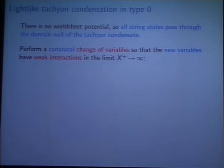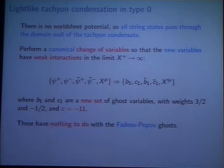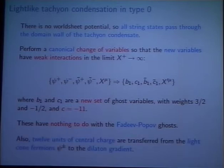So this theory again is so solvable and so simple. We can perform a change of variables to find a weakly interacting set of world-sheet variables for when x⁺ is large. We just exchange the light cone left and right moving fermions for a new ghost system, a ghost system we'll call B₁C₁. The weights are 3/2 and -1/2. The central charge is -11. And they have nothing to do with the Faddeev-Popov ghosts, they're just a new set of ghosts. They're not Faddeev-Popov ghosts, but there's just some canonical transformation one can perform. So these B₁C₁ degrees of freedom are emergent. They come from the light cone world-sheet fermions. By the way, when one analyzes the world-sheet quantum effects carefully, you see that 12 units of central charge are transferred to the dilaton gradient to make up for the change in central charge of the fermion system. So again, the total central charge stays the same.